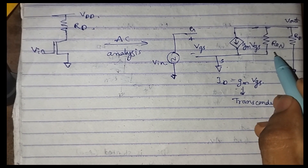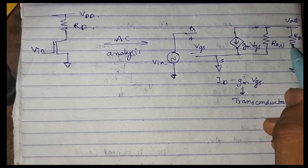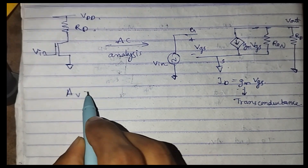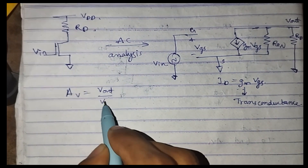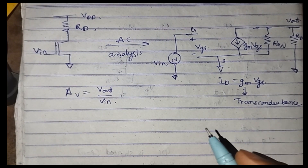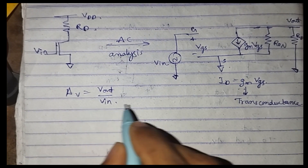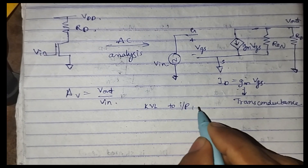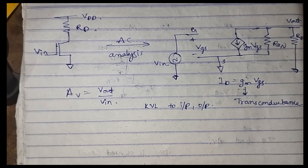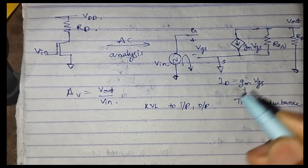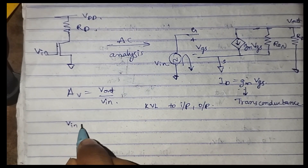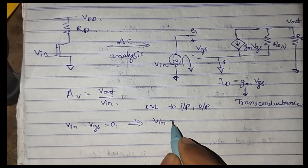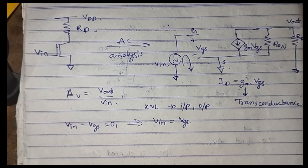R_on is the internal resistance of the MOSFET and RD is the drain resistor. To find voltage gain, given by V_out over V_in, we apply KVL to the input loop and the output loop. Applying KVL to the input loop gives V_in minus VGS equals zero, which means V_in is nothing but the gate-to-source voltage VGS.